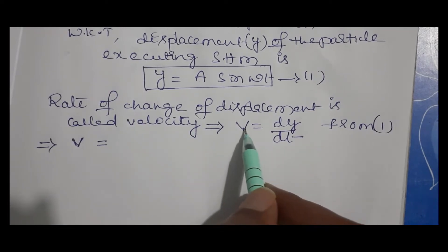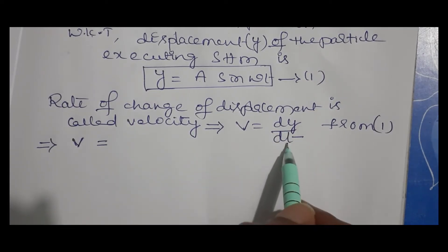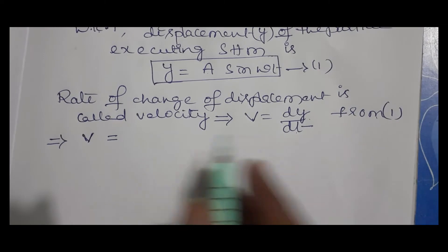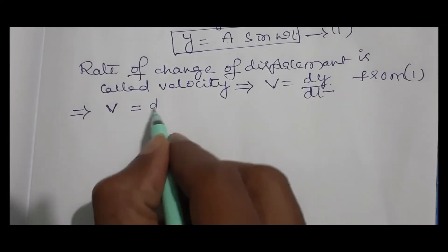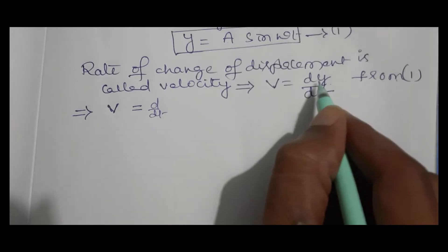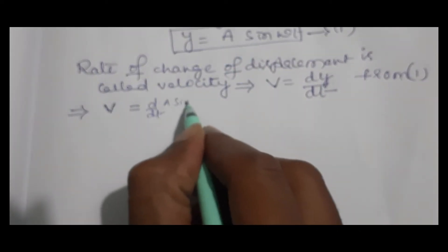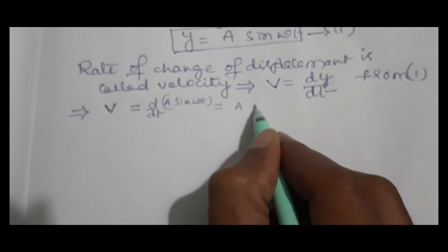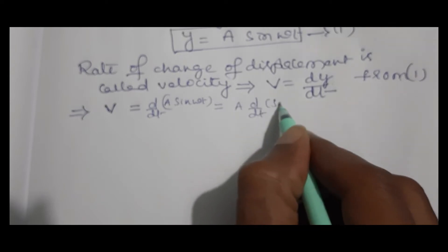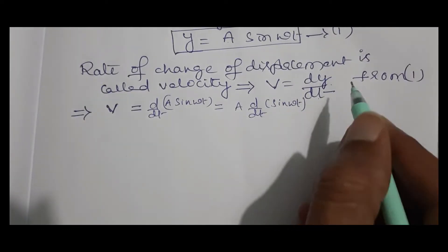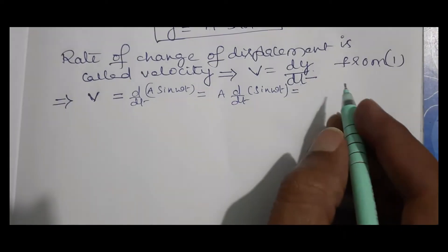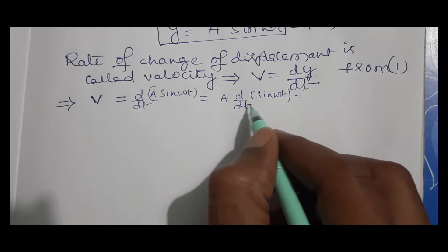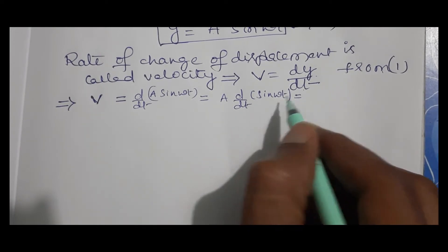The rate of change of displacement is called velocity, given by v equals dy/dt. Substituting equation 1, we write v equals d/dt of A sin(ωt). Since A is a constant, this becomes A times d/dt of sin(ωt). The differentiation of sin(ωt) with respect to t gives cos(ωt).